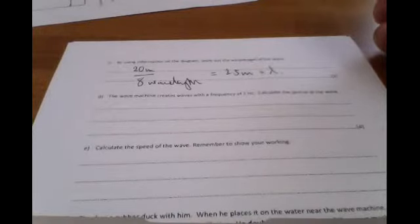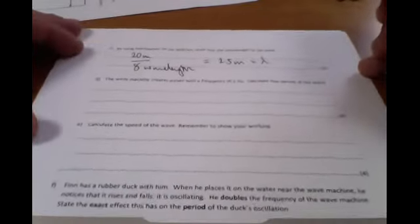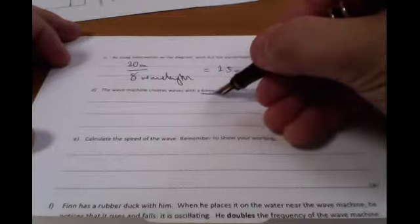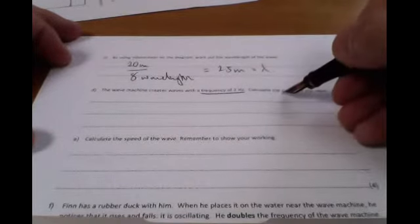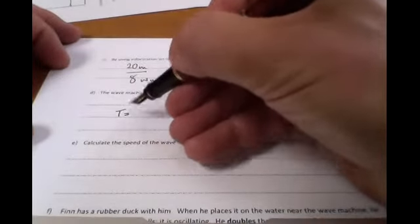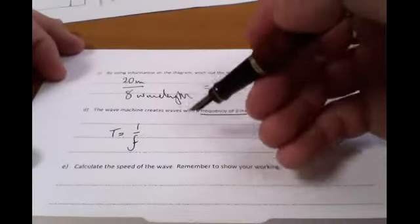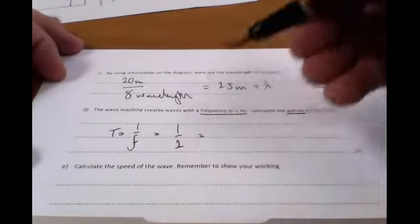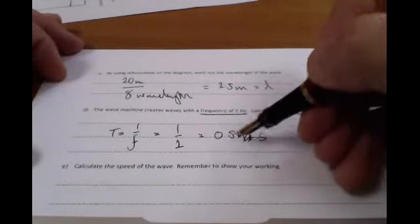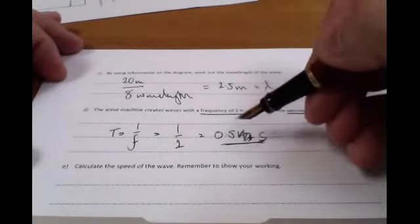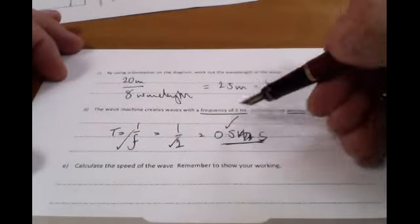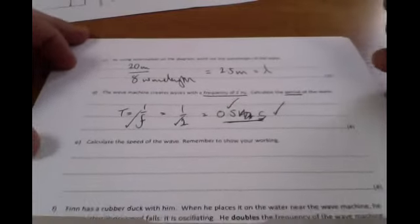Good. I hope all the wave theory knowledge is flooding back. The next one asks, the machine generates frequency of 2 hertz. Underline the important information here. The frequency is 2 hertz, calculate the period of the wave. You should recall straight away this equation: the time period is 1 over the frequency. Therefore, simply 1 over 2 gives us 0.5 seconds. Don't leave it as a fraction, leave it as a decimal. One mark for equation, one for substitution, one for answer, one for units, four in total.